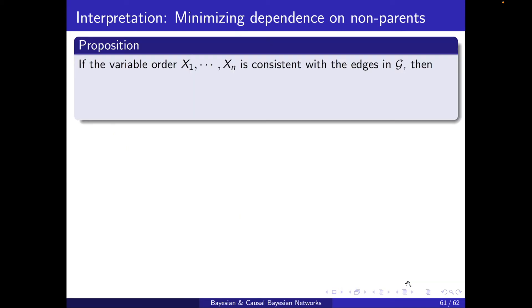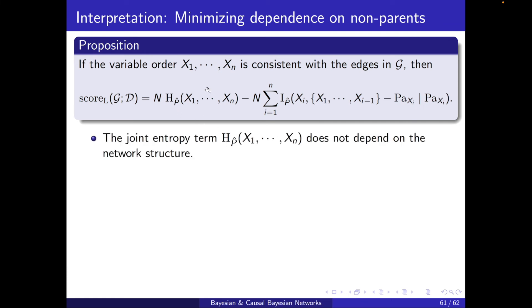Let's look at it in a different way. If the variable order X1 to Xn is consistent with the edges in G, then I will have the likelihood score in this way. And by being consistent with the edges, it means that the parents of Xi are only the preceding ones, X1 to Xi minus 1. The joint entropy term. So you see here it's the opposite of the last time. Here the entropy appears with a positive sign and the mutual information is with a negative sign.